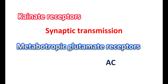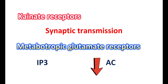Metabotropic glutamate receptors are linked with inositol triphosphate production, which increases intracellular calcium levels, resulting in excitation. Some metabotropic receptors are also linked with inhibition of the adenylyl cyclase system, reducing cyclic AMP. These glutamate receptors can exist pre-synaptically or post-synaptically and are also present on astrocytes, where they mainly produce modulatory effects on neuronal transmission.